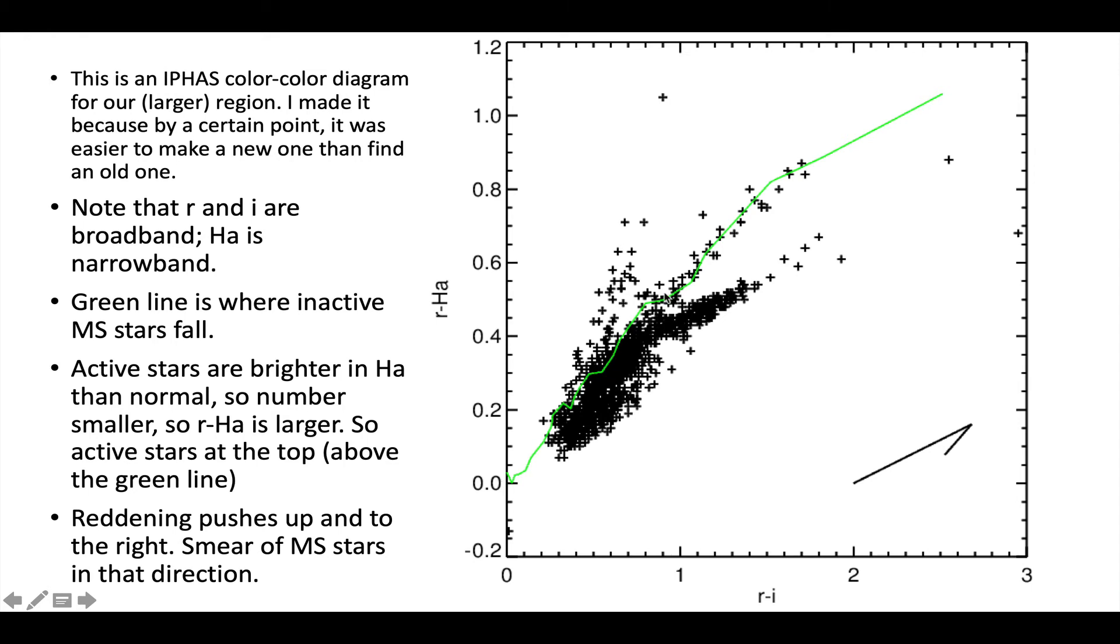The green line here is where the main sequence stars fall. Stars that are rotating quickly, and so they have a lot of chromospheric activity, are going to be brighter in H alpha than normal. And young stars that are rotating quickly are going to have a lot of activity. So they're going to have a lot of H alpha brightness.